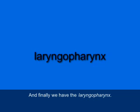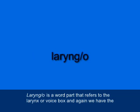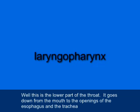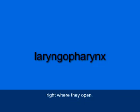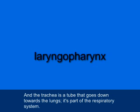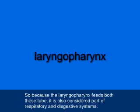Finally, we have the laryngopharynx — L-A-R-Y-N-G-O-P-H-A-R-Y-N-X. Laryngo refers to the larynx or voice box, and pharynx refers to the throat. This is the lower part of the throat, going down from the mouth to the openings of the esophagus and the trachea. The esophagus goes down to the stomach and is part of the digestive system; the trachea goes toward the lungs and is part of the respiratory system. Because the laryngopharynx feeds both tubes, it is part of both systems.